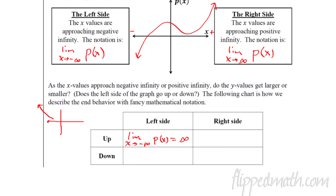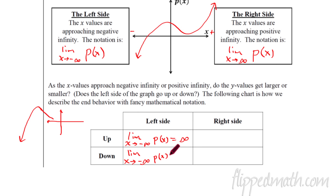Now let's consider a different situation. Pretend this function actually eventually starts to go down — maybe it goes down like this. That means as I go to the left, this function is going down. The way I would write that is: the limit as X approaches negative infinity of P of X equals negative infinity. These are the two ways you can describe the left-side end behavior for a polynomial function — it's either one or the other. The left side is always as X goes to negative infinity, so that never changes. You just need to figure out whether it goes up or down as you go to the left.